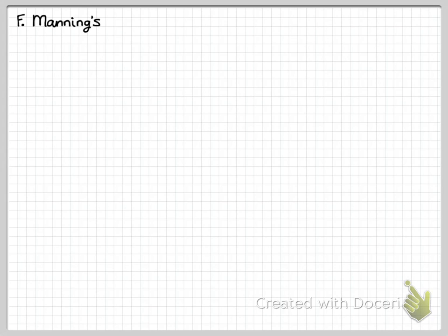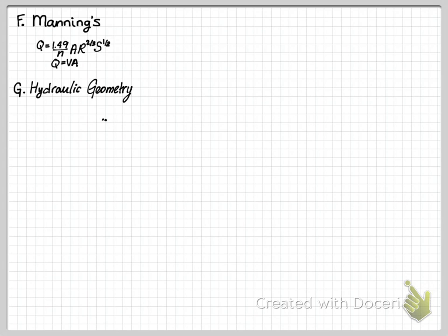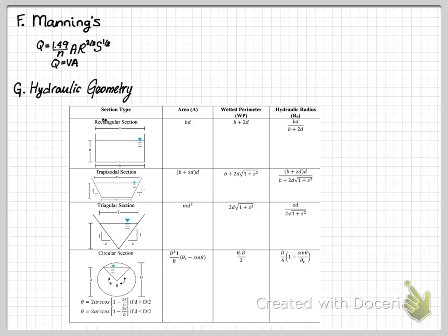Next, let's discuss surface roughness. Surface roughness is measured through the use of Manning's equation, as you may recall from a hydraulics or open channel course. Flow rate is a function of the cross-sectional area and the hydraulic radius. Hydraulic geometry is important so you can quantify the area and the wetted perimeter of your surfaces. Note that in the equation, if you see an M, that is a Z — so in the triangular section under area, it should read ZD squared, not MD squared.